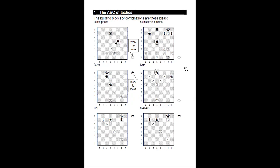Nets are where a piece is attacked with no hope of escape. A checkmate net means the game is over, but you can net other pieces too. In the diagram, the circled black knight is caught in a net — the white bishop on a5 is attacking and the white bishop on d5 guards all four possible escape squares, so the black knight is lost. Pins are where two pieces are on the same line and whichever one moves, the other is lost.